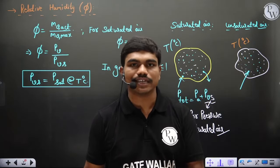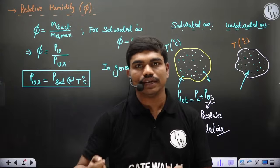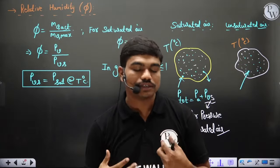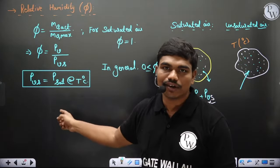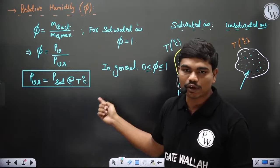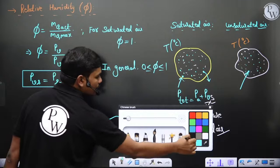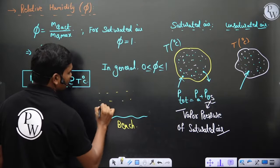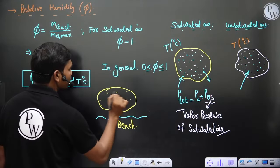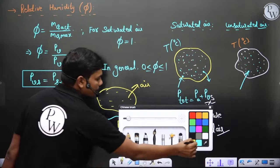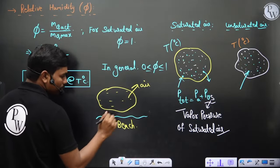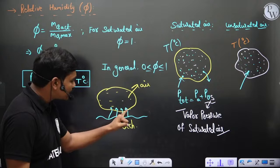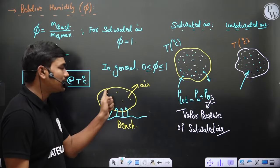In places like Rajasthan, phi is very small — if you walk in the desert and your body sweats, the sweat immediately evaporates. Whereas near water bodies like beaches, the air flowing over is nearly saturated. The air takes up water molecules as it passes over the sea surface. This air gets slightly cooled and is at nearly saturated conditions.